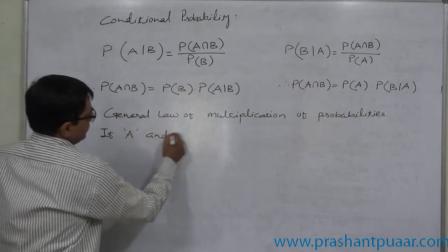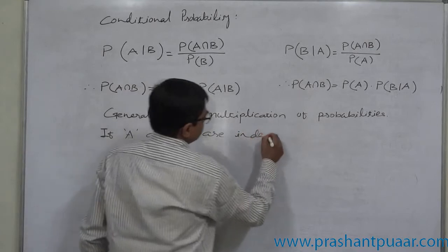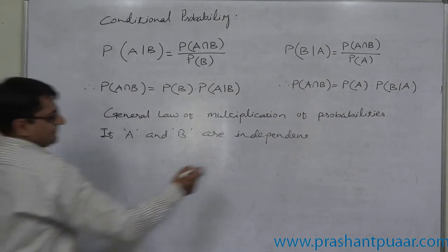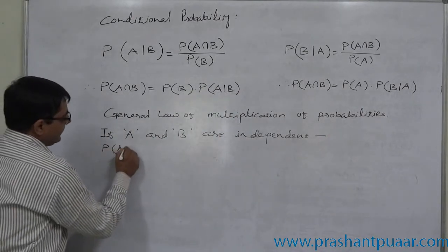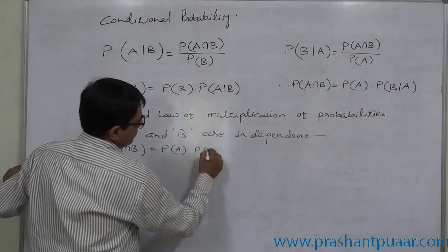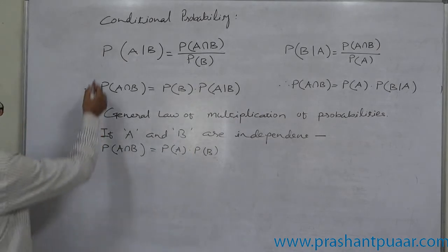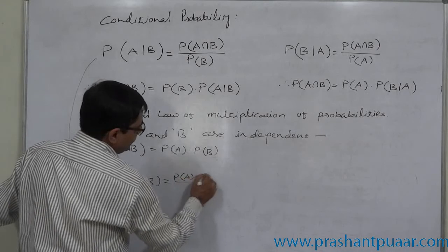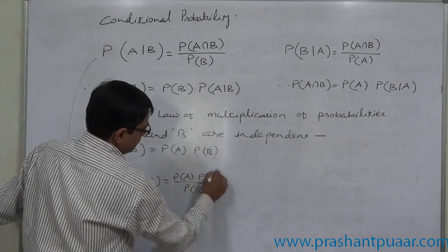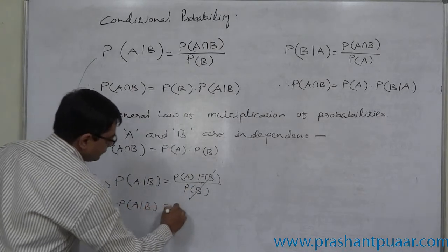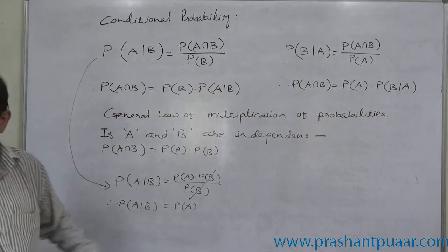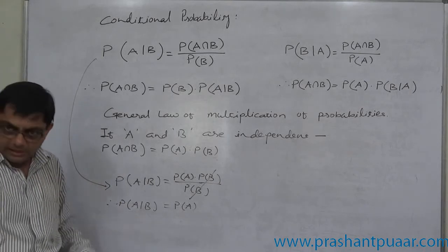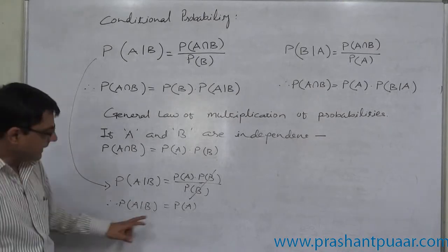Now, what if A and B are independent? If A and B are independent, then P of A intersection B equals P of A into P of B. Using the conditional probability formula, P of A given B equals P of A into P of B divided by P of B, which simplifies to P of A given B equals P of A. If we want to check whether A and B are independent or not, we can use this formula — if P of A given B equals P of A, then A and B are independent events.